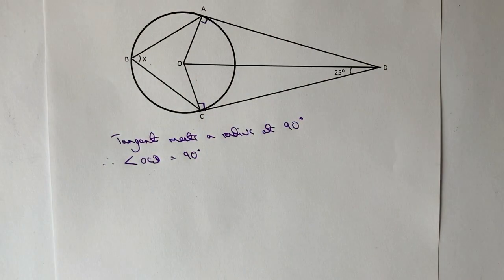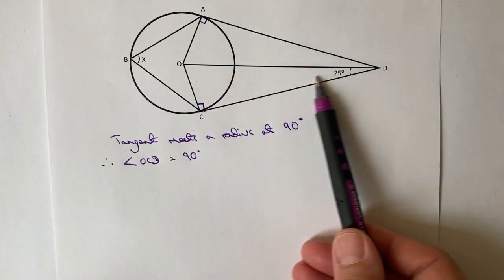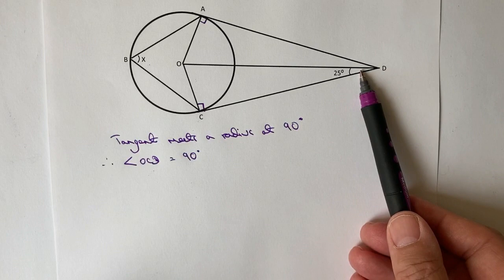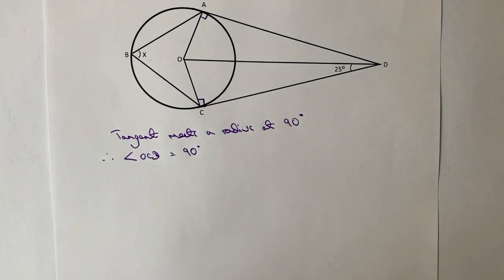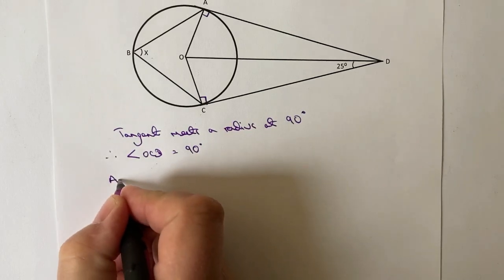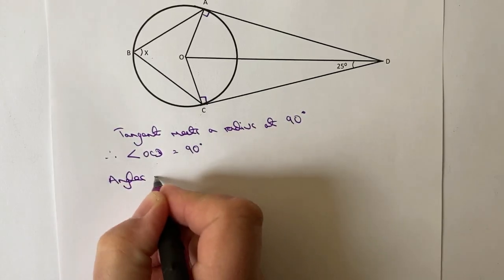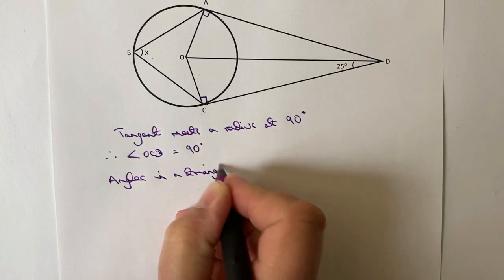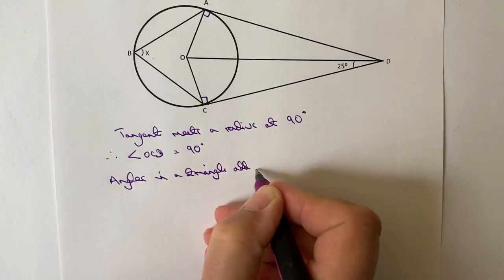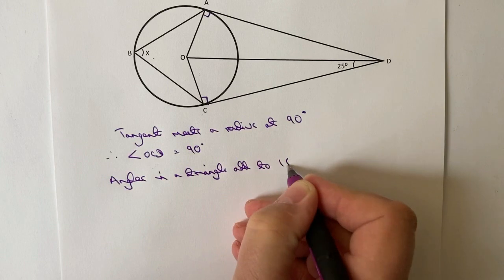Alright, so effectively what we've got now is a triangle, a right angle triangle and all I'm going to look at is this bottom triangle here. So we've been told this is 25, we've been told this is 90, so therefore I know that all the angles, so angles in a triangle add to 180 degrees.